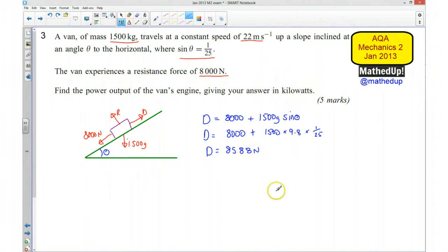My power equals my driving force times my speed. So I'm going to use 8,588 times 22, which is my speed. That tells me my power equals 188,936 watts.